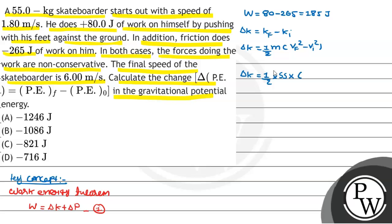Into vf square minus vi square. The final speed given in the question, Bacho, is 6, so here will come 6 square minus 1.8 square. So change in kinetic energy is nearly equal to 900.9 joule.